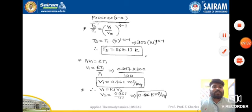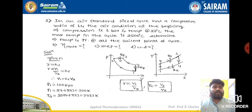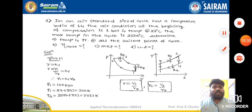To summarize, the key observation in this numerical is the 2-to-3 constant pressure process; otherwise everything is the same as the Otto cycle. There are three important ratios to remember: compression ratio = v1/v2 (given as 14), cutoff ratio = v3/v2, and expansion ratio = v4/v3. These three ratios are essential for solving diesel cycle numericals. Thank you.